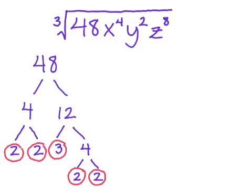So instead of writing it as 48, I'm going to write it as the product of all of these numbers. This means instead of just 48, I'm going to end up having 2 cubed — remember, we're trying to write this in powers of 3, and I happen to have 3 of them — times 2, because there were 4 twos total, times 3, the last factor I had. All of those multiply together to give me 48, and I specifically wanted to write it grouping things together into groups of 3 if possible. So right there: 2 cubed.